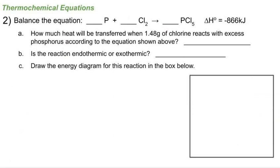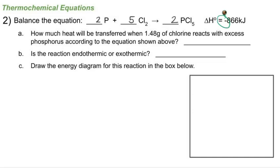In the next problem, I need to balance the unbalanced equation for P + Cl₂ → PCl₅. I notice an odd number of chlorines on the product side, so I'll put a 2 in front of PCl₅, giving ten chlorines. Then I put a 5 in front of Cl₂ and a 2 in front of P to balance phosphorous. Every time two phosphorous react with five Cl₂, I get two PCl₅ and 866 kilojoules of energy given off. The negative delta H value means this reaction is exothermic — part B: exothermic.